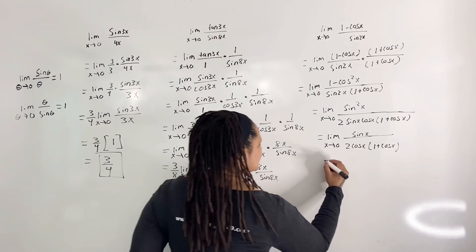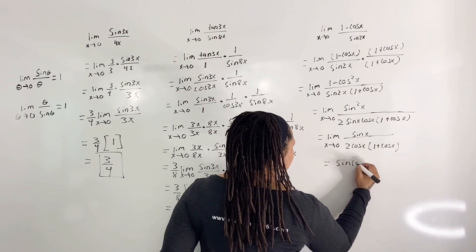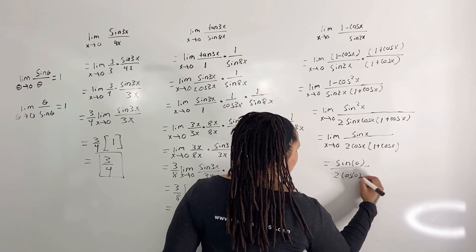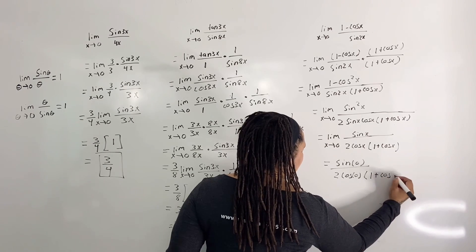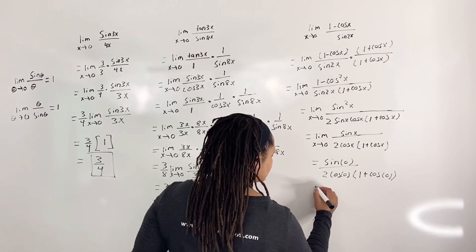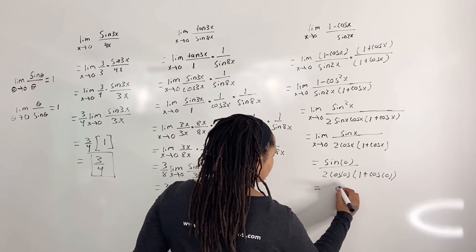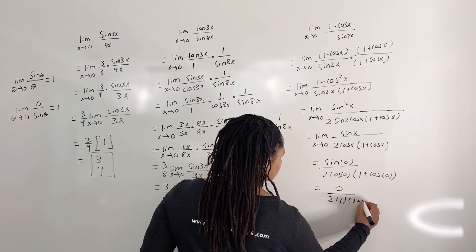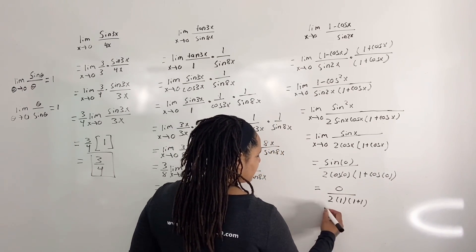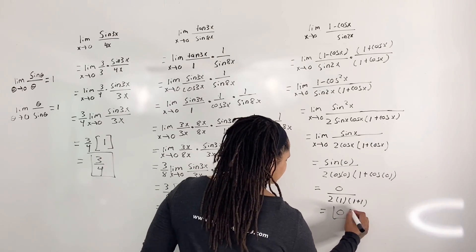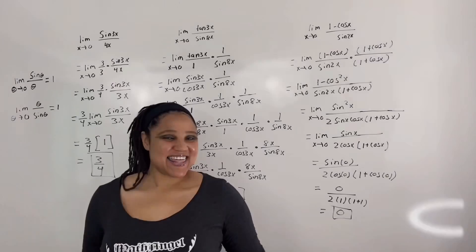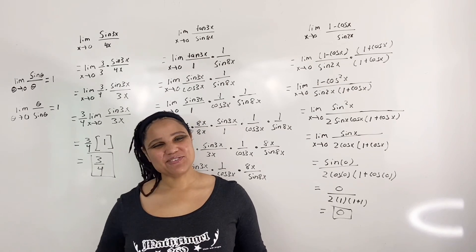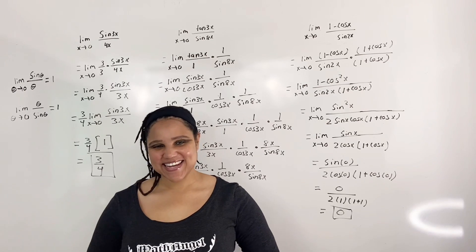Now we can simply plug 0 into x. This is equal to sine of 0 over 2 times cosine of 0 times 1 plus cosine of 0, which equals 0 over 2 times 1 times 1 plus 1. And of course 0 over anything is just 0. That is how you evaluate limits of trig ratios. Thank you for watching and I will see you in the next video.